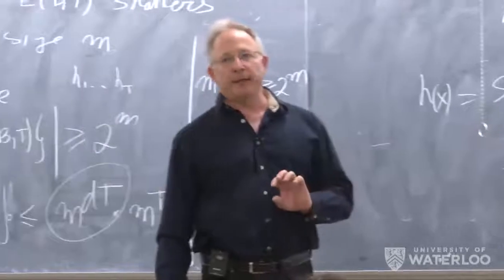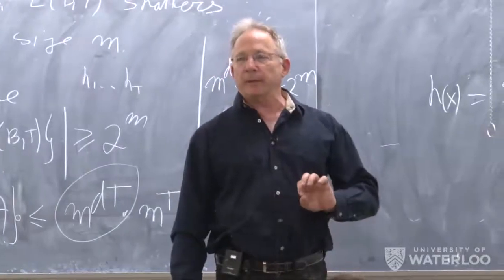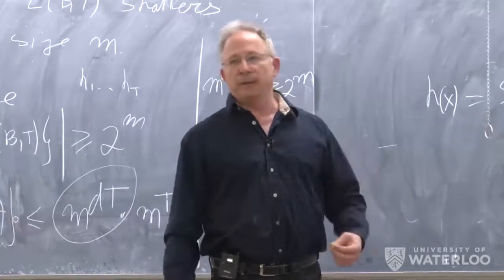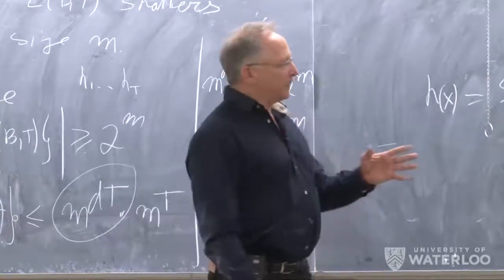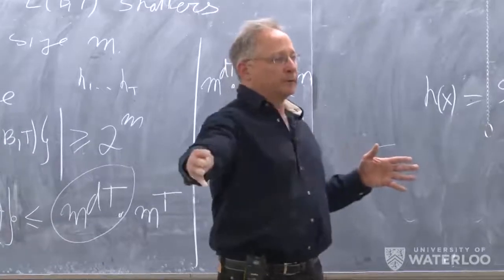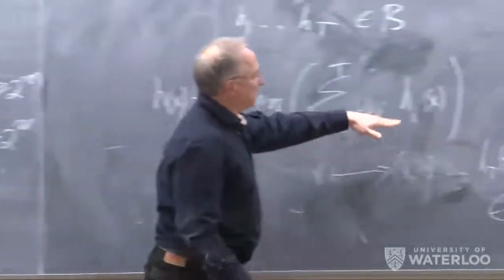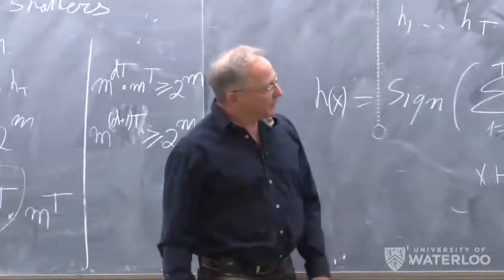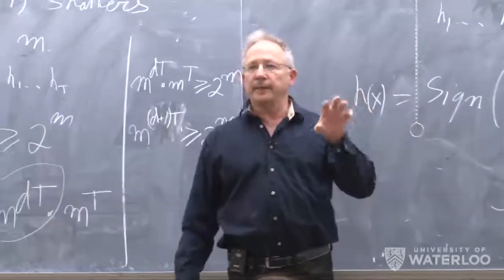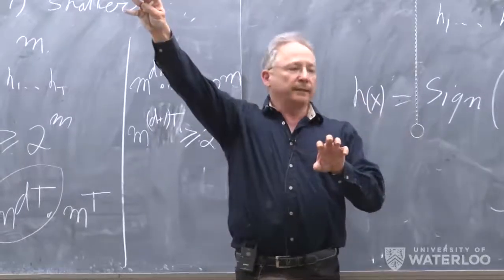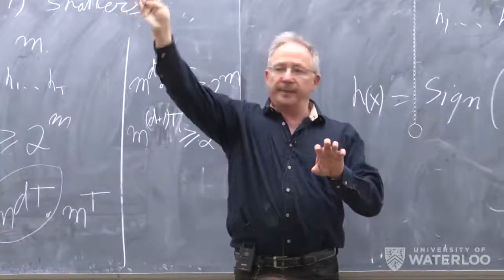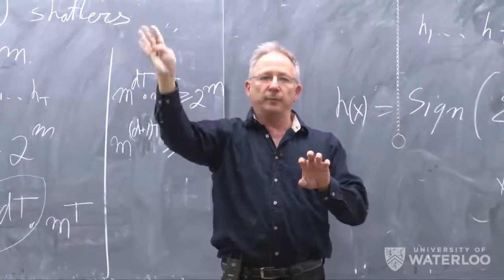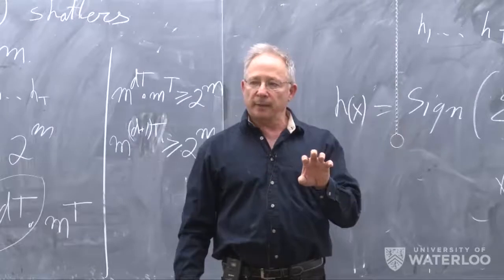We can think of the boosting algorithm as follows: each iteration generates another H_t, and we're representing our points as a longer vector, then taking a linear classifier over those representations. This idea — taking a sample, embedding it in a high-dimensional Euclidean space, and taking a linear classifier — is a very common idea in other machine learning algorithms as well.